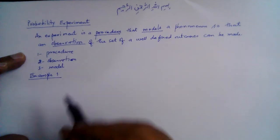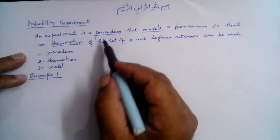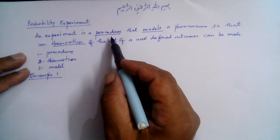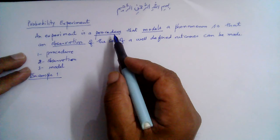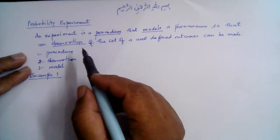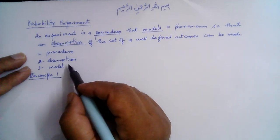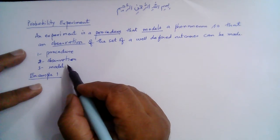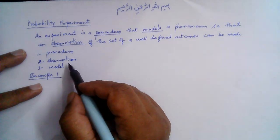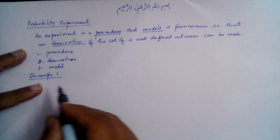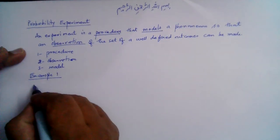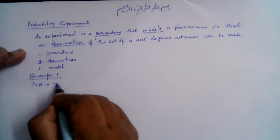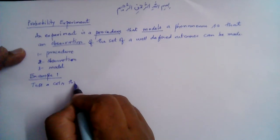The procedure is how we perform the experiment. The observation — there can be many possible outcomes from an experiment and different kinds of observations can be made, so which particular observation we are interested in. And then there is a model associated with the experiment to model the parameters which can affect the observation. For example, let's toss a coin three times.